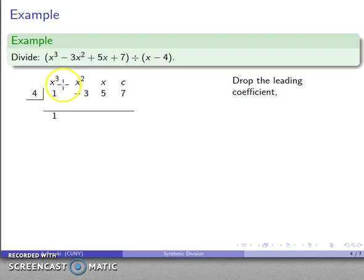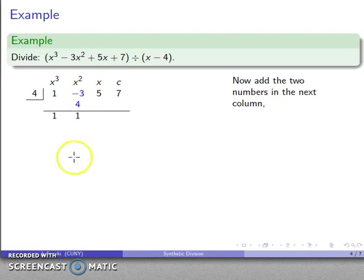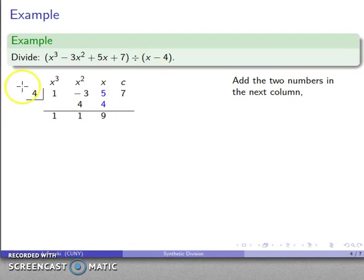Now the first thing I'm going to do is drop that leading coefficient straight down. This one goes straight down, and then I'm going to multiply by this value here. So 4 times 1 is 4. I'll set that down in the next column and then I'll add. So negative 3 and 4, I add that, get 1, and then I'll repeat this process. 4 times 1 gives me 4, I'll set that down in this column and then I'll add. 4 plus 5 is 9. 4 times 9 is 36, and then I'll add, and now I've reached the last column.